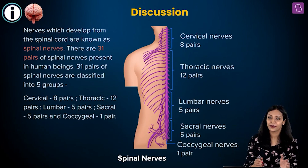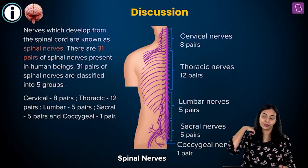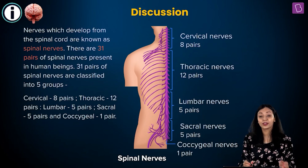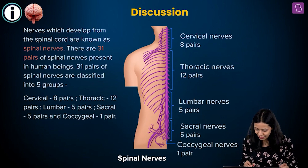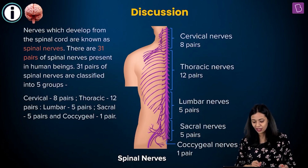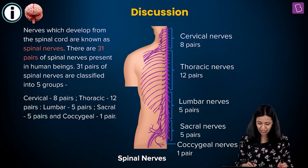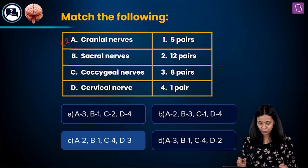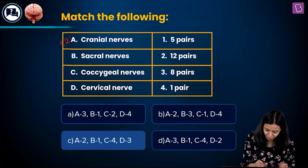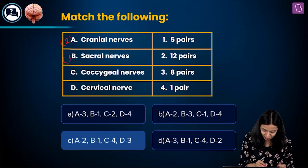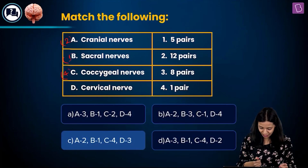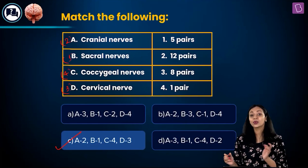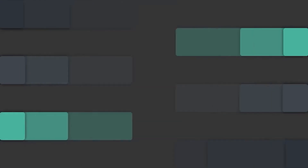The 31 pairs of spinal nerves are classified into five groups: cervical nerves — eight pairs, arising from the neck region; thoracic nerves — twelve pairs; lumbar nerves — five pairs; sacral nerves — five pairs; and coccygeal nerves — one pair. So the correct answer is option C: cranial nerves — 12 pairs (A2), sacral nerves — 5 pairs (B1), coccygeal nerves — 1 pair (C4), cervical nerves — 8 pairs (D3).